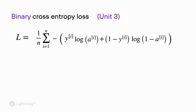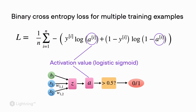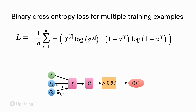Previously we had the binary cross entropy loss — that's the loss we talked about in unit three. We are not going over individual terms here since we did that to a great extent in unit three already. However, it's worth highlighting the summation term, which sums the loss over multiple training examples. If we have a dataset with n training examples, we sum the loss over all n training examples. Here, 'a' corresponds to the activation value — in logistic regression it's the logistic sigmoid activation.